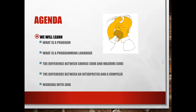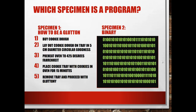We'll also cover what's the difference between an interpreter and a compiler, and working with Java. So which specimen is a program? If I give you two different specimens — one is 'how to be a glutton' and one is binary (zeros and ones) — the other specimen is a sort of a list. How to be a glutton: number one, buy cookie dough; number two, lay out the cookie dough on tray in five centimeter diameter circular portions; preheat oven to 425 degrees Fahrenheit; place the cookie tray with cookies in the oven for 15 minutes; remove the tray.